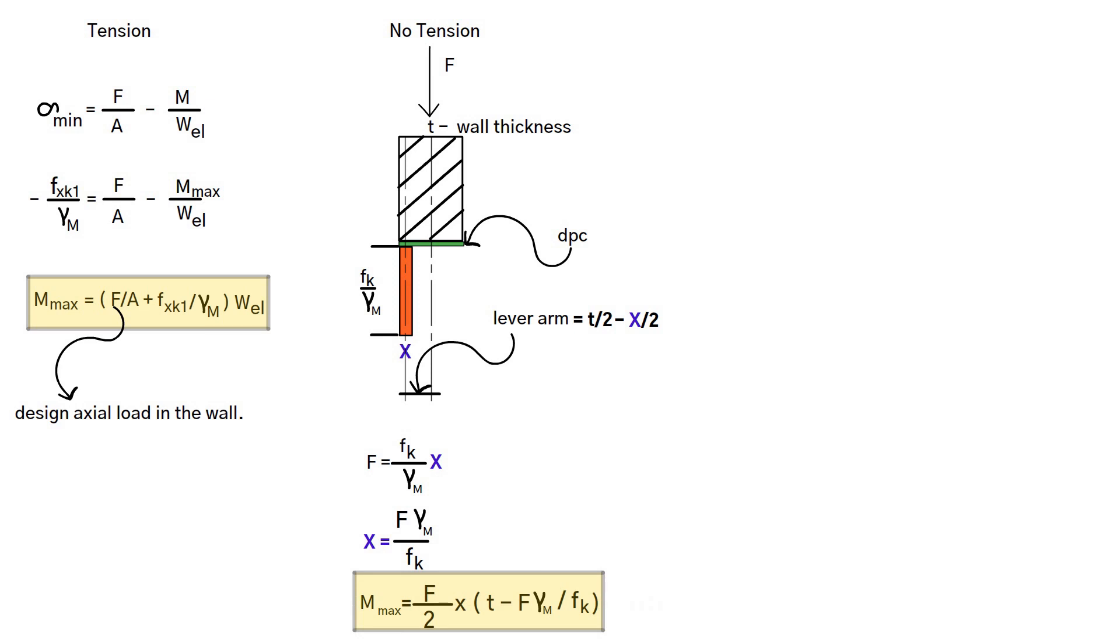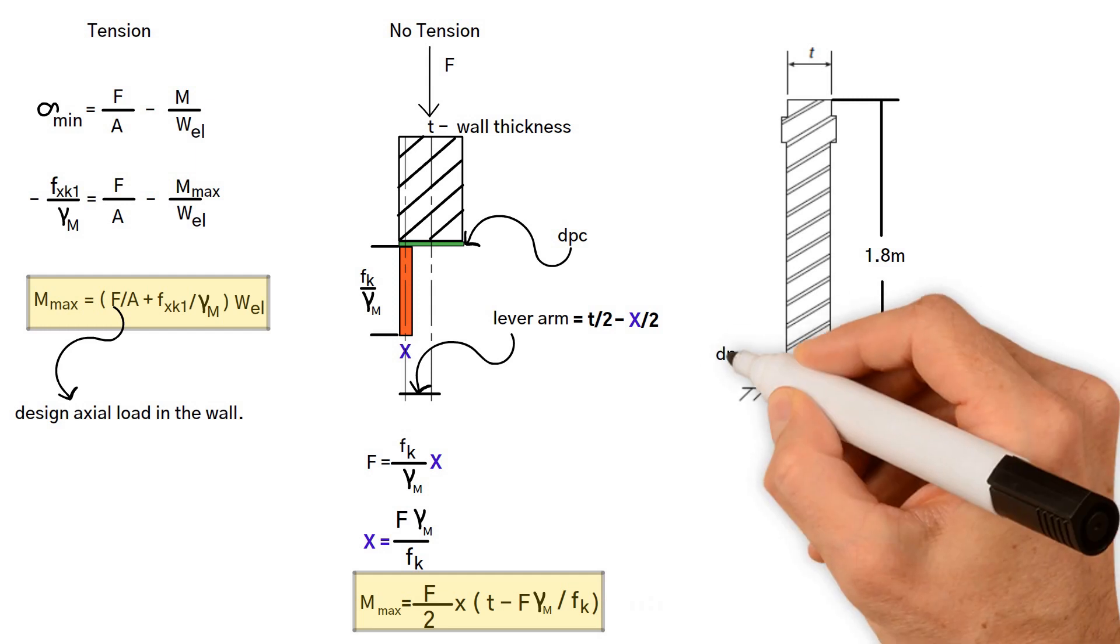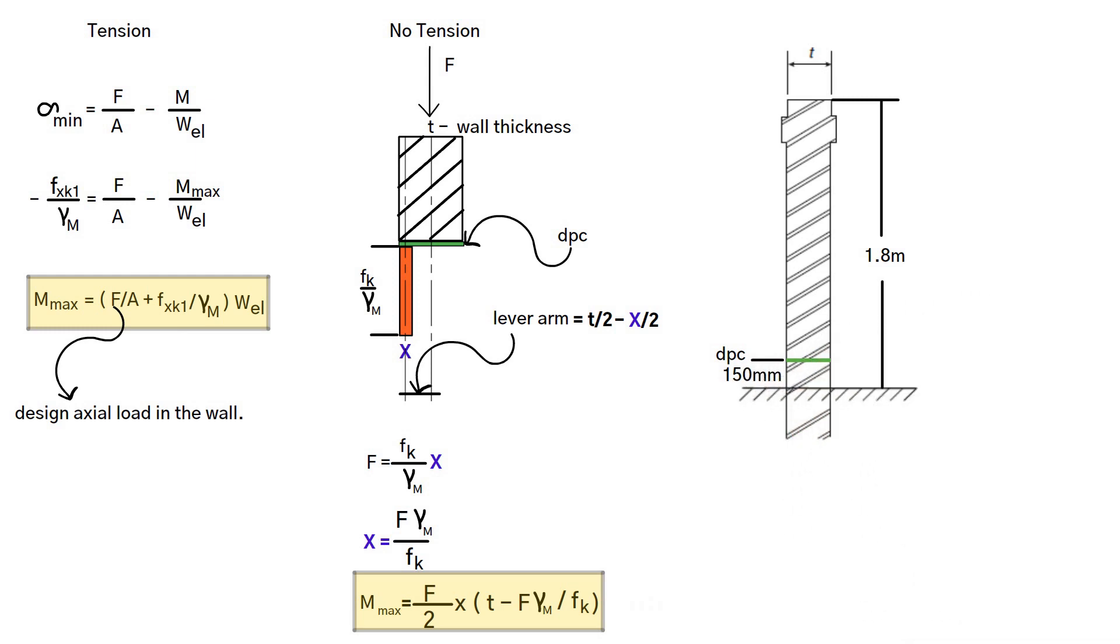Let's look at the following example. A 1.8 meter high boundary wall is to be built out of facing bricks. It will have a plastic damp-proof course 150 millimeters above ground level. Based on the following information, what is the required thickness of the wall?